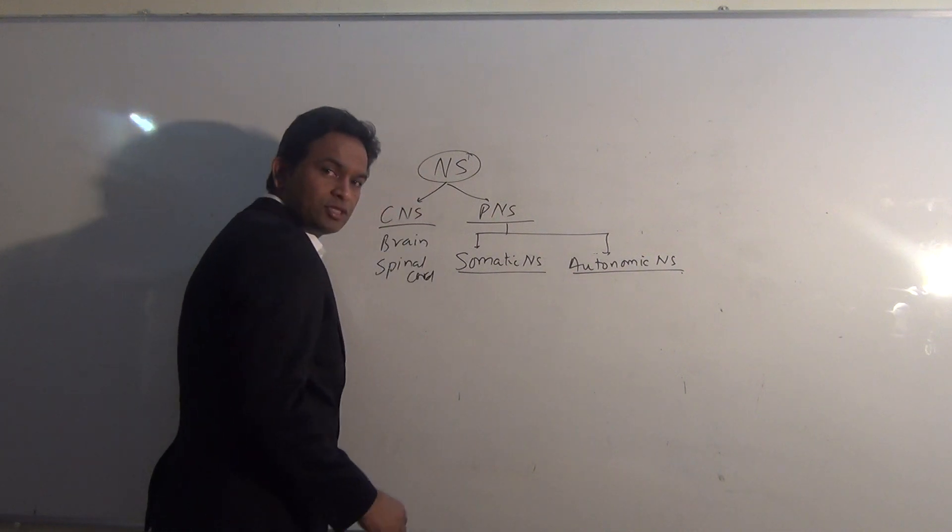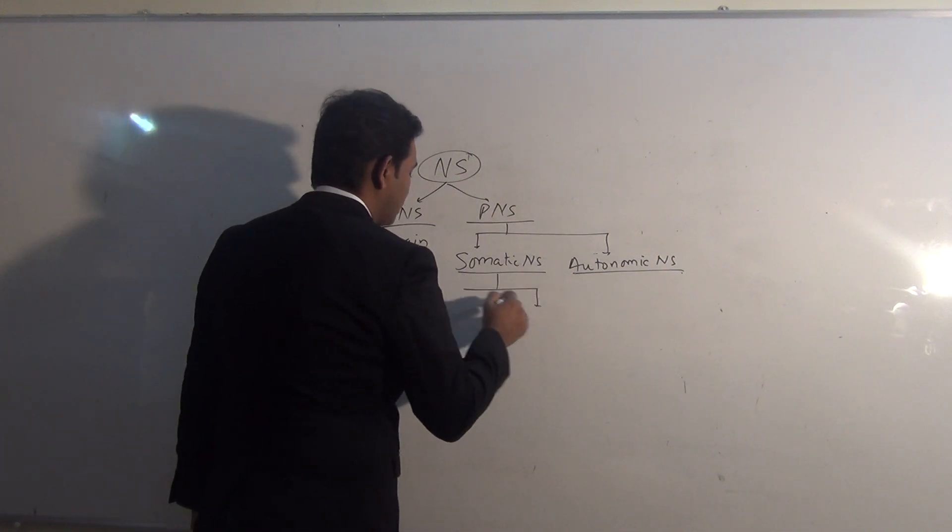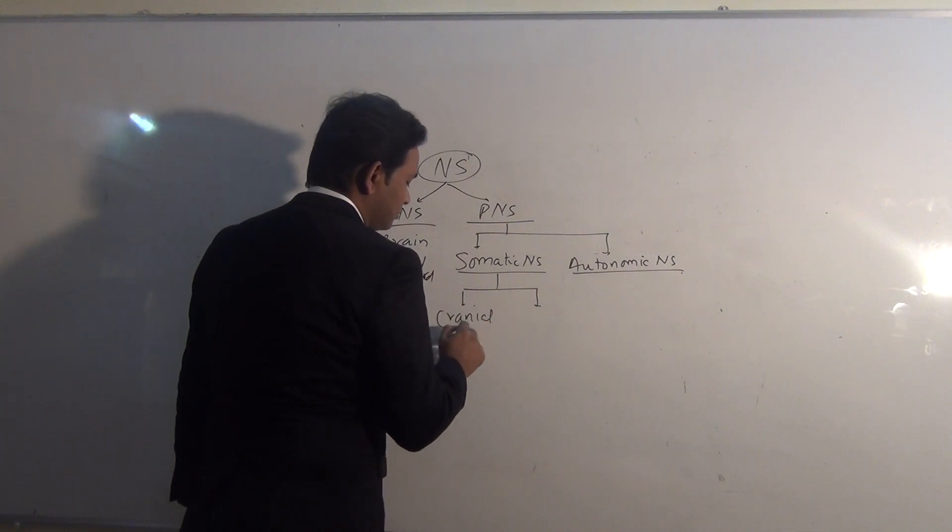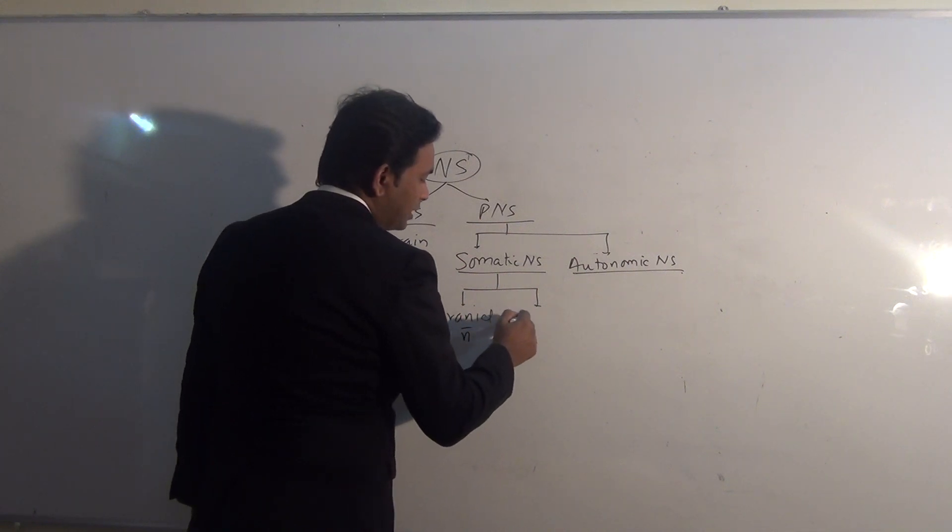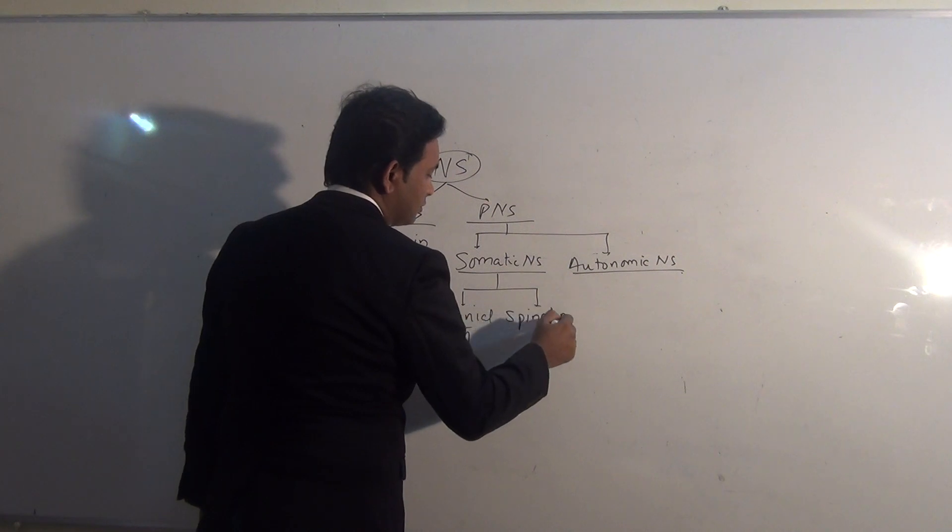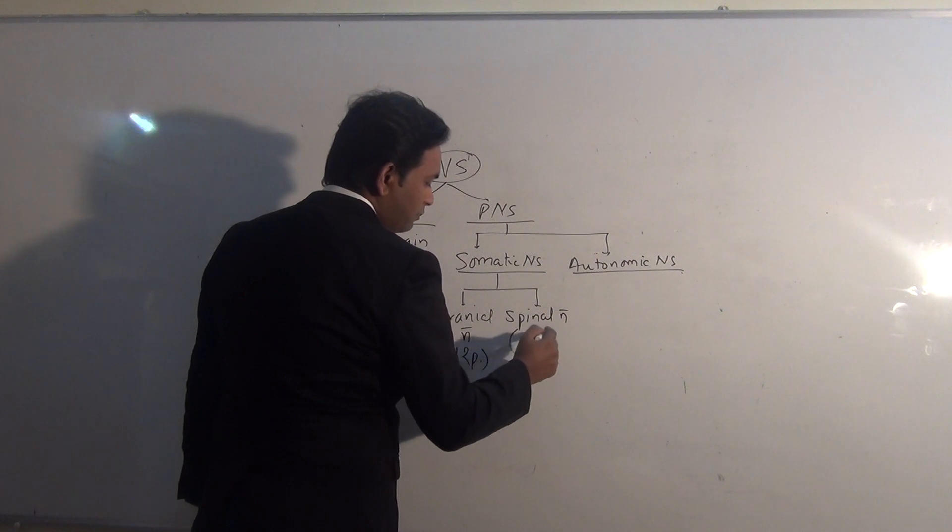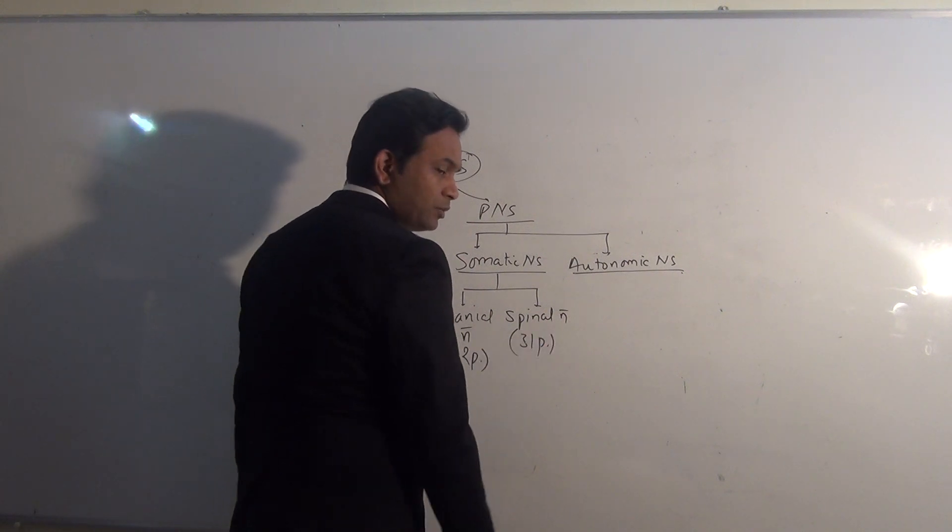The somatic nervous system includes cranial nerves and spinal nerves. In human, cranial nerves are 12 pairs while the spinal nerves are 31 pairs.